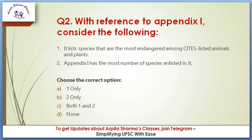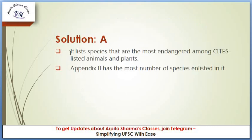The next question: with reference to Appendix 1, consider the following statements. One: it lists species that are most endangered among CITES-listed animals and plants. Two: Appendix 1 has the most number of species listed in it. The answer is option A — one only. Statement one is correct. Statement two is incorrect: Appendix 2 has the most number of species, with more than 34,000 species enlisted.